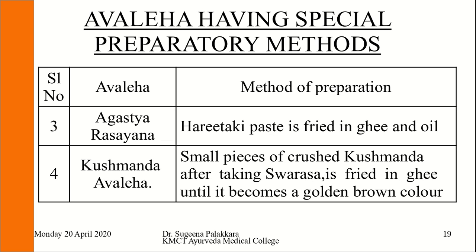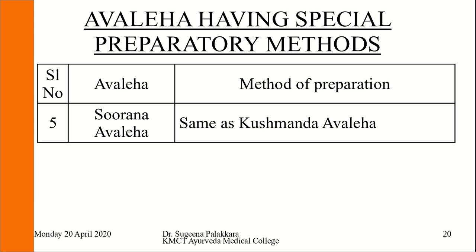Third is Agasthya Rasayana, which contains Haritaki; the Haritaki paste is fried in ghee and oil. Fourth is Kushmanda Avaleha, where small pieces of crushed Kushmanda, after taking its Swarasa, are fried in ghee until golden brown. Fifth is Surana Avaleha, where the same procedure as Kushmanda Avaleha is adopted with Surana (yam).